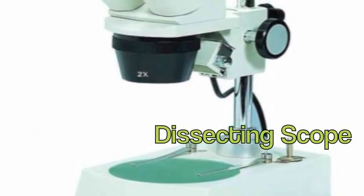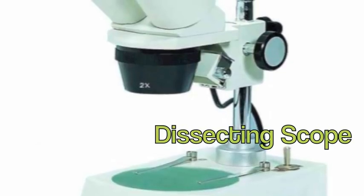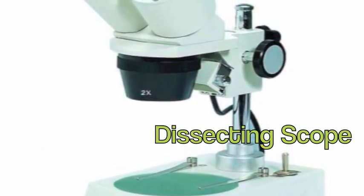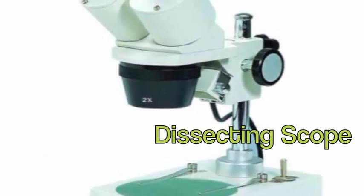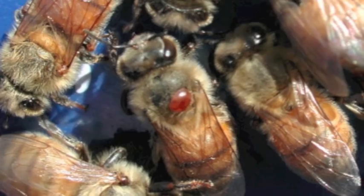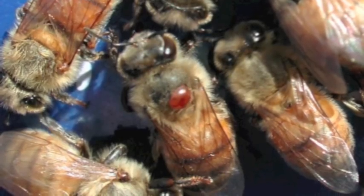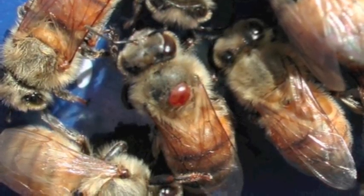A dissecting scope will give us a 3D image of an object when illuminated with light. Here you can see this red mite on top of those bees.